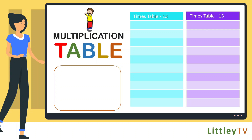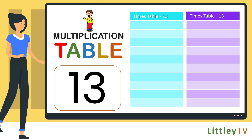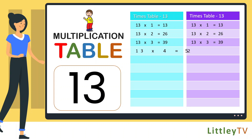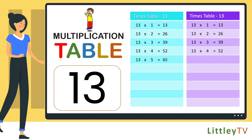Table of 13. 13 ones are 13, 13 twos are 26, 13 threes are 39, 13 fours are 52, 13 fives are 65, 13 sixes are 78.